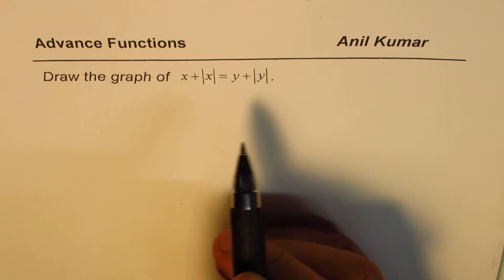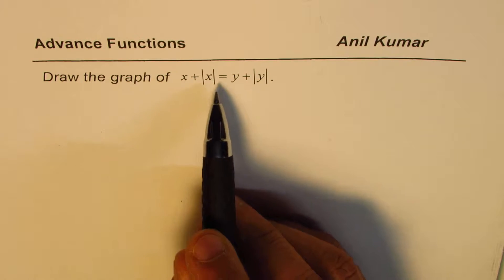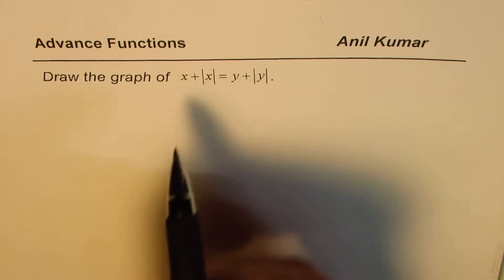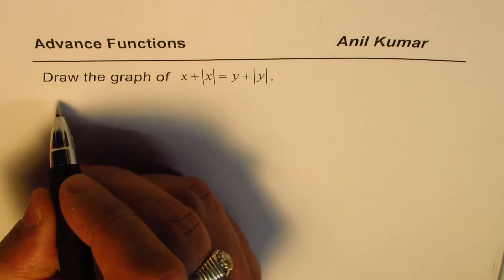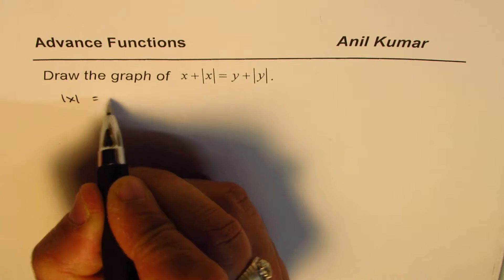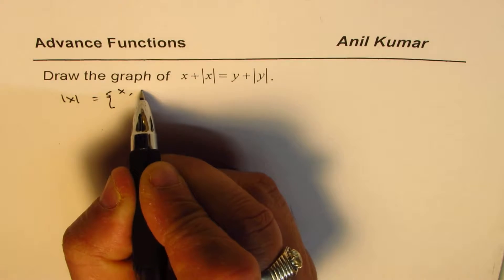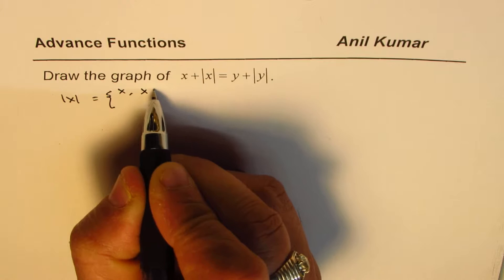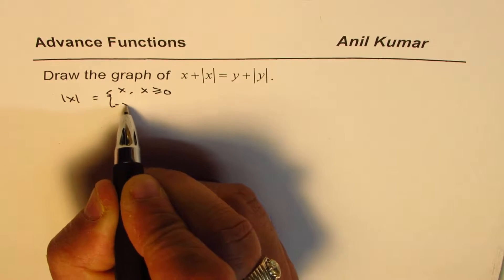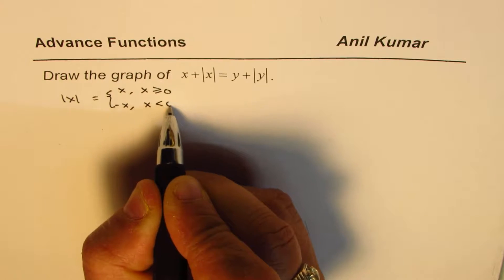Whenever we have absolute functions involved, we should always see them as a piecewise function. For example, absolute x really means that it is equal to x if x is greater than or equal to 0, and is minus x if x is less than 0.